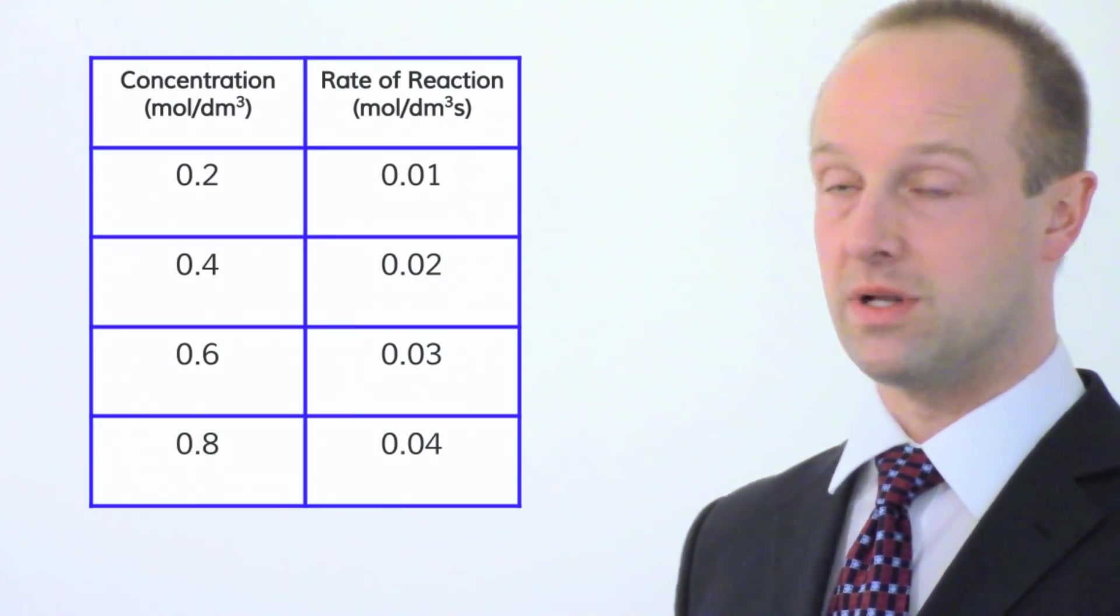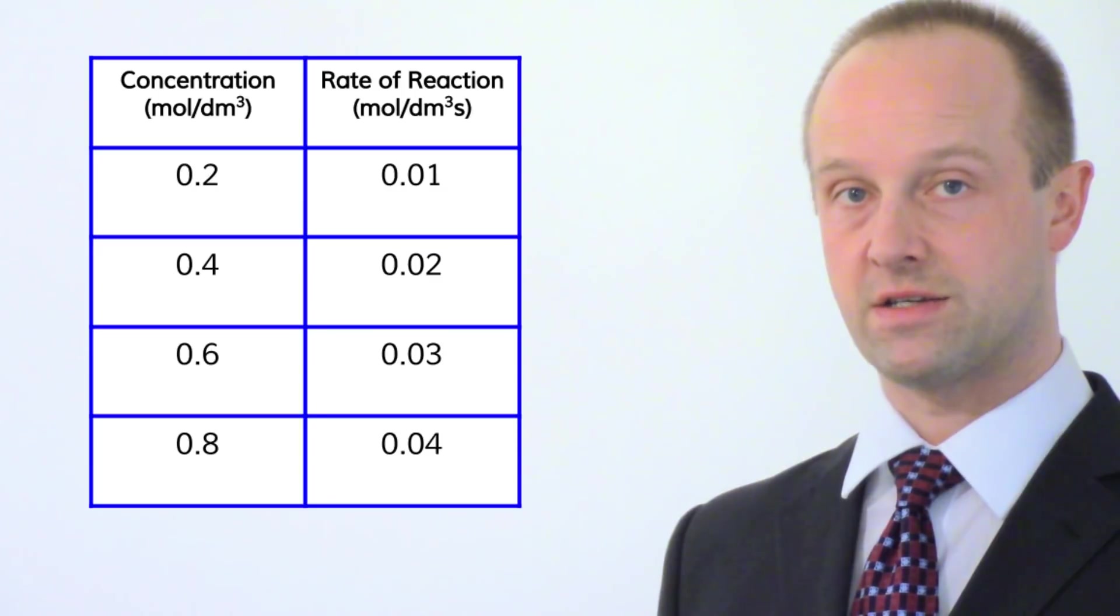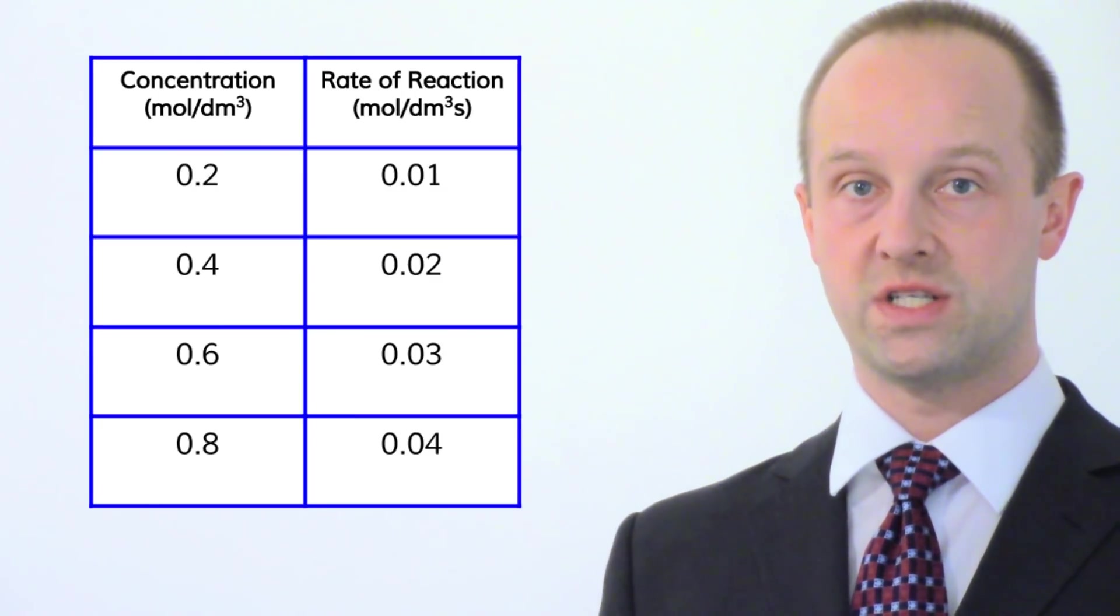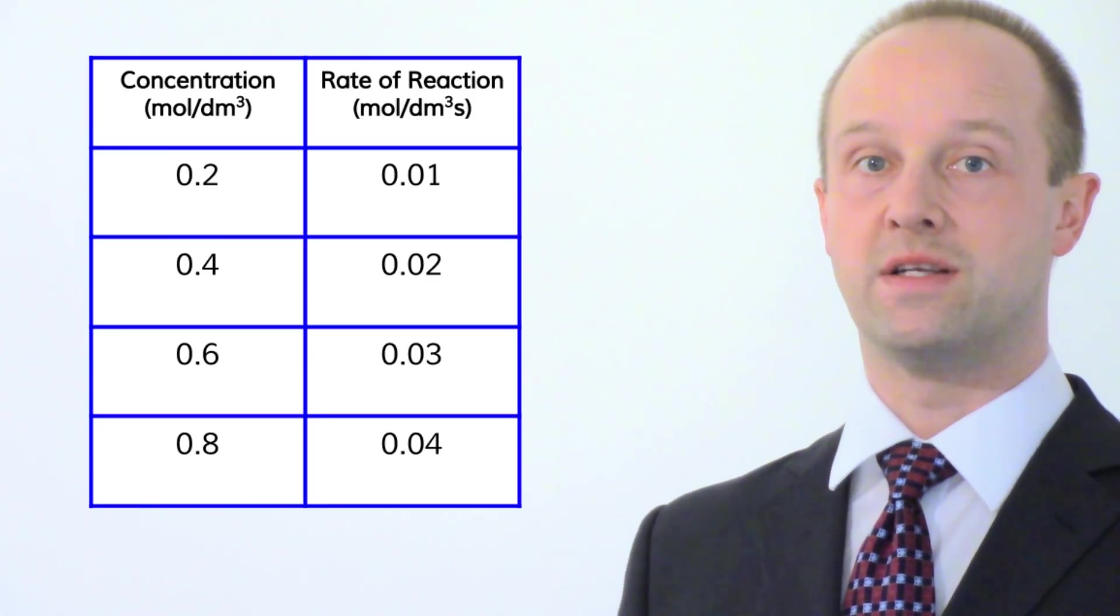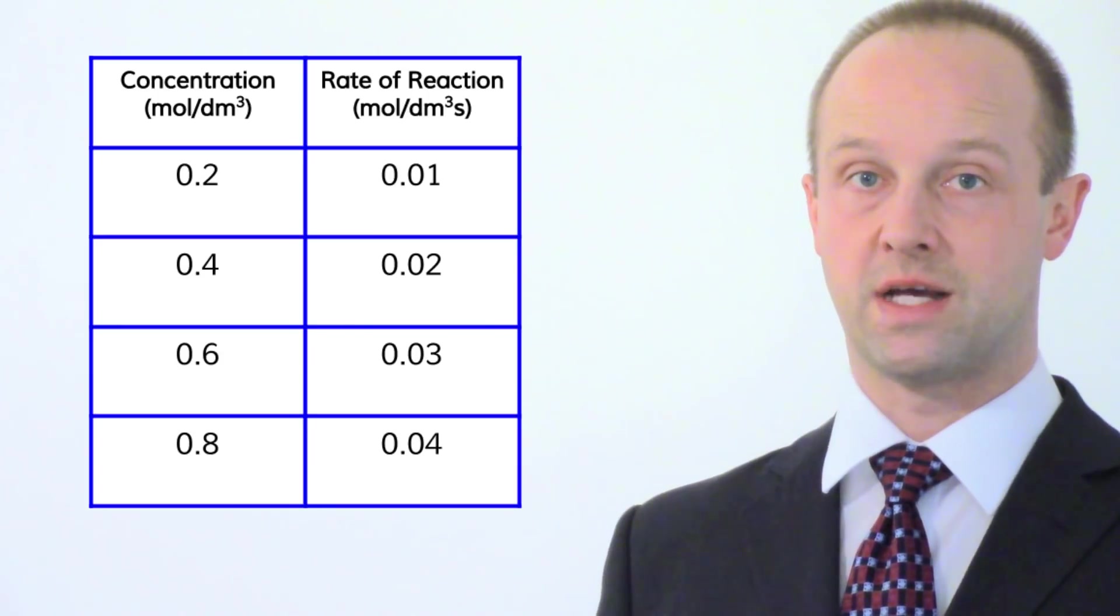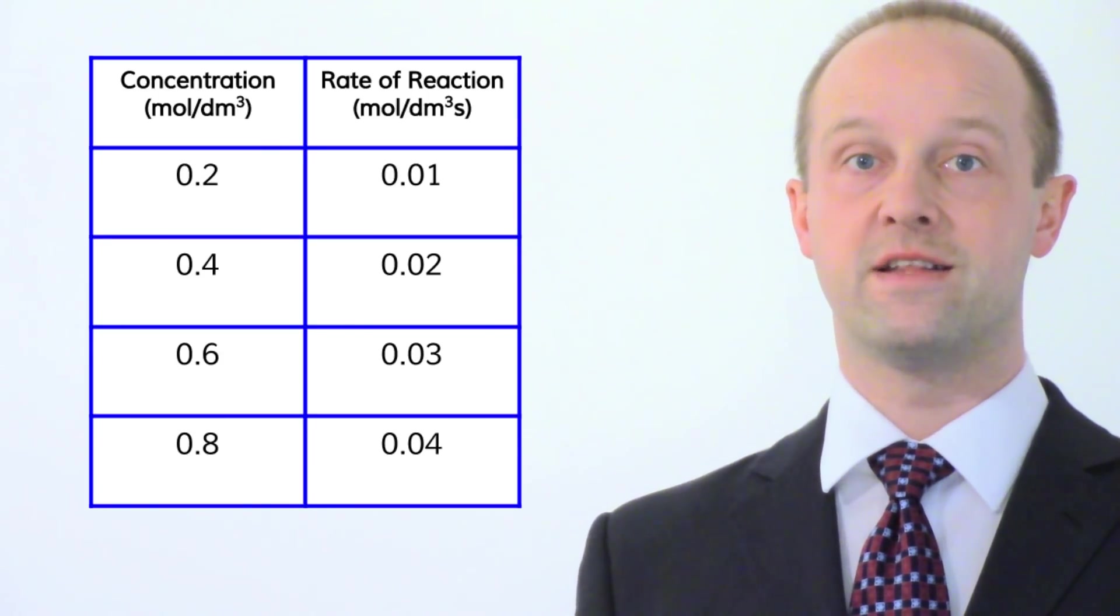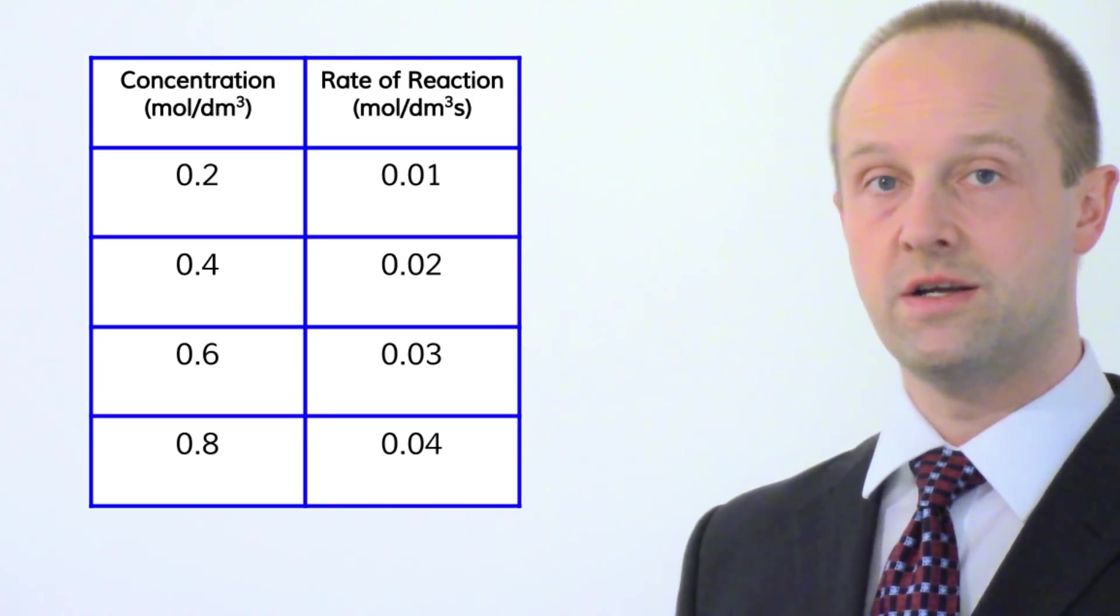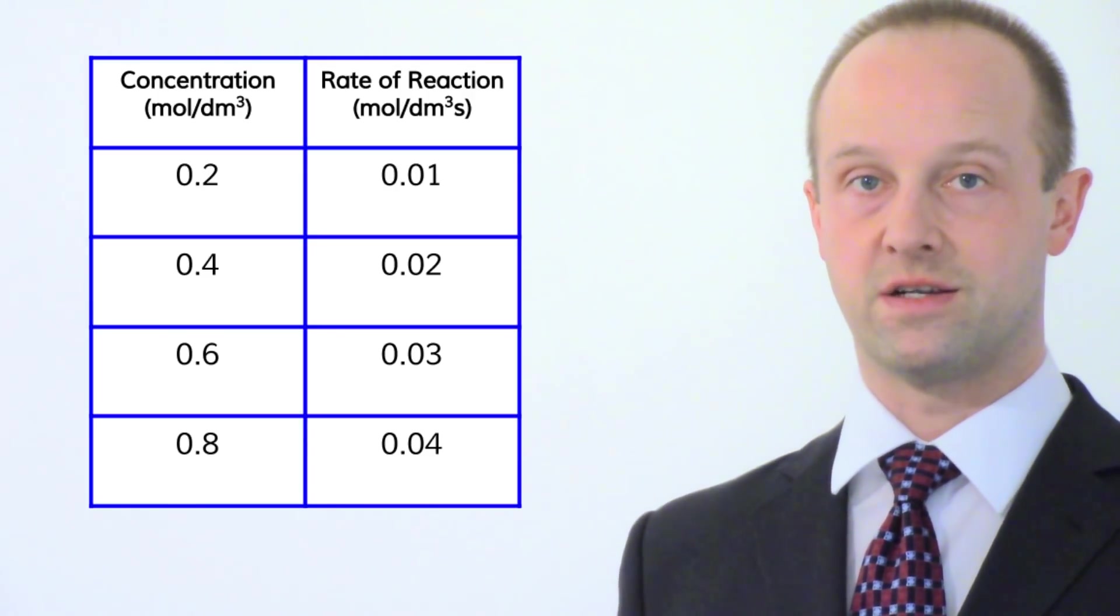Let's start out with a really simple example first. This table of concentration against rate of reaction. You can see here we've got an independent variable, the thing which we're changing (the concentration), and we've also got a dependent variable, the rate of reaction. And you can see there's a fairly clear relationship here. As we increase the concentration we also increase the rate of reaction.